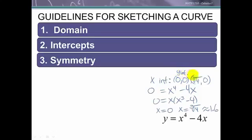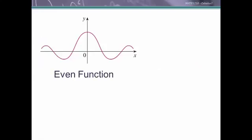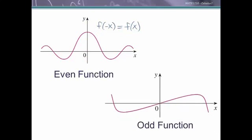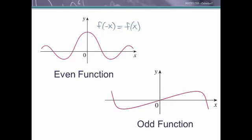For y-intercepts, we put 0 in for x, but we get back 0, so this x-intercept is also where it crosses the y-axis at 0. Now let's remember how to test for symmetry. If you have an even function, it's symmetric about the y-axis. The test for an even function is to put negative x in for x, and once you simplify it, you get the original function back.